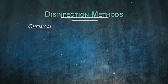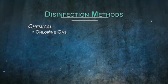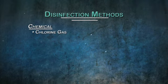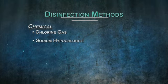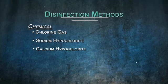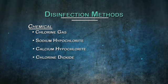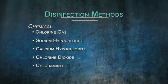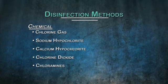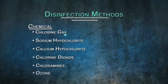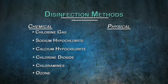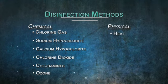Utilities that disinfect can use a number of methods, some chemical and some physical. Examples of the chemical methods include chlorination with chlorine gas, sodium hypochlorite, calcium hypochlorite, chlorine dioxide, or chloramines, which are made by combining chlorine and ammonia, and disinfection using ozone. Examples of the physical methods include heat and ultraviolet radiation.